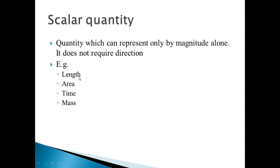Similar examples of scalar quantities are length, area, time, and mass. All these quantities don't require direction. Area does not require direction. Time also does not require direction. Similarly, mass does not require direction. Mass of any body is 10 kg or 20 kg — we are not saying 10 kg in a downward direction or 10 kg in an upward direction. We can directly represent mass by magnitude. These are the scalar quantities.